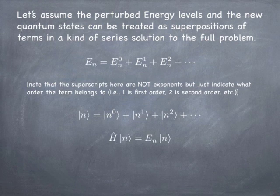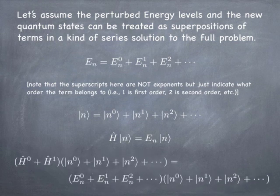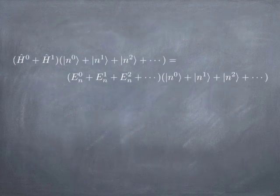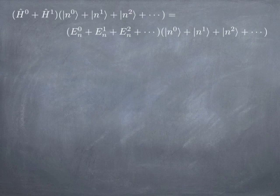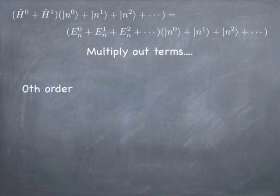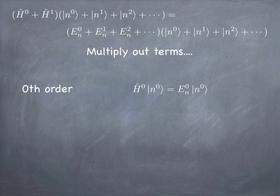The problem we want to solve is the Hamiltonian acting on the nth solution is equal to the nth energy times the nth solution. But we can put in what we know the energy eigenvalue is going to be in terms of its perturbation components — the zeroth order, first order, second order — and also put in what we expect the solutions to be as superpositions of the different orders of the perturbation solution, and we get a new eigenvalue equation. The idea is to multiply this out and collect terms of like powers. The zeroth order terms from the left and right give us that the original Hamiltonian acting on the original state equals the original energy times the original state — that's just the eigenvalue problem for the unperturbed Hamiltonian.